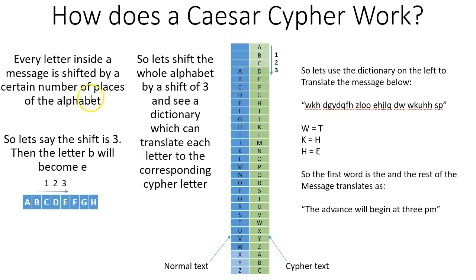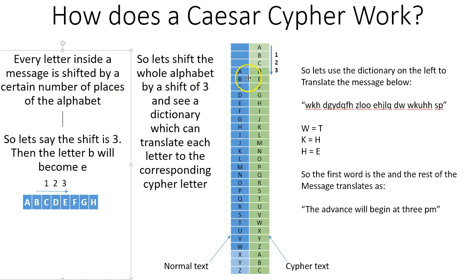The whole idea is that each letter in a message is actually a shifted letter. You can think of an alphabet as a sequence and then imagine a particular letter in a normal alphabet being shifted by a certain number. So let's say if that shift is 3, the letter b will become — with shift 1, b becomes c.